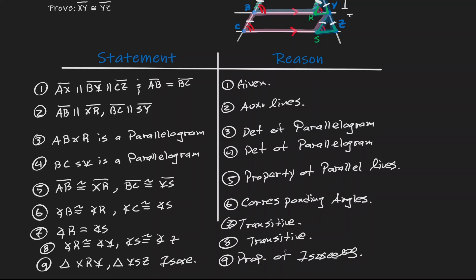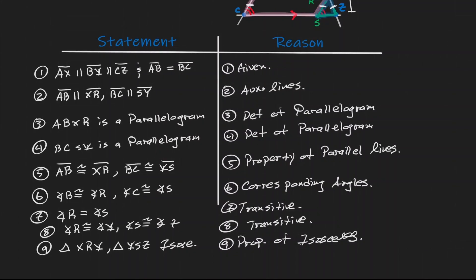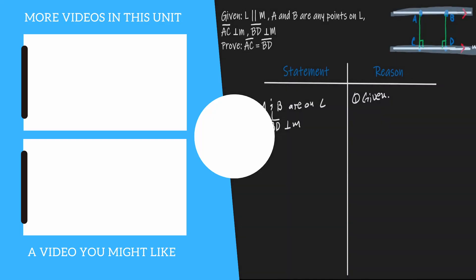If we have an isosceles triangle, then we know that RX is congruent to XY. On the bottom, BC is congruent to SY, and SY is congruent to YZ inside the isosceles triangle. We have now shown that those two lengths have the same measurement — and that's exactly what we wanted to show. If you'd like to continue learning about mathematics, you can check out the videos on the left.